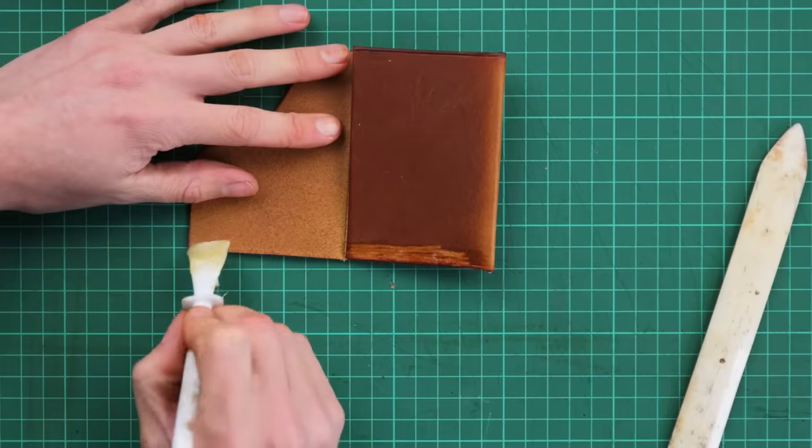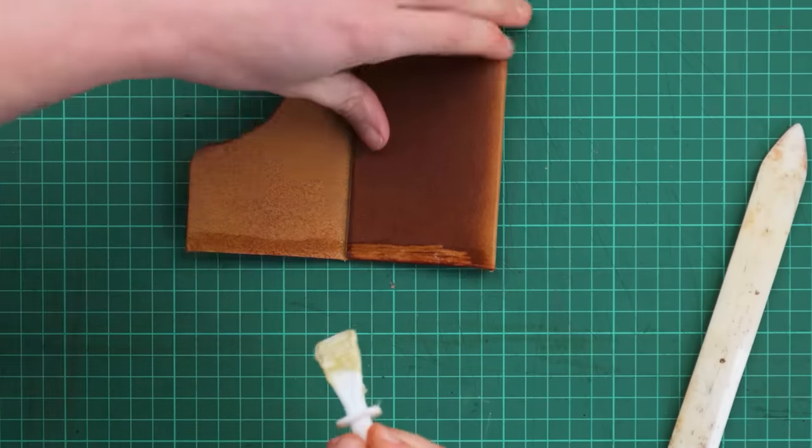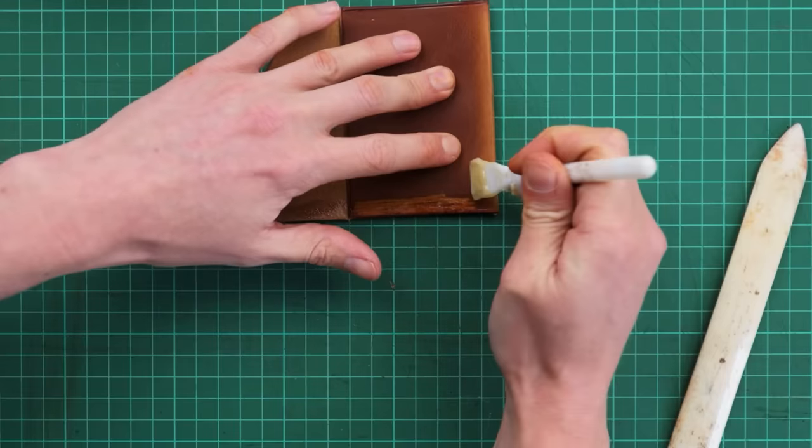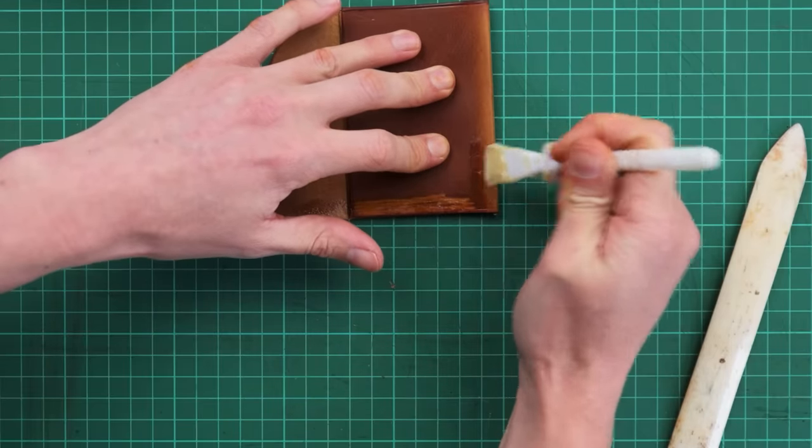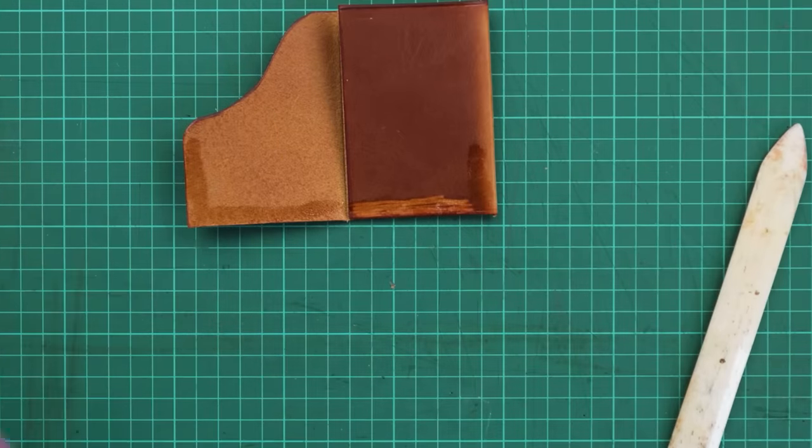And then we can glue along the bottom of both the middle section and our front. We also need to put a little bit of glue up towards that curved corner. And once again we just need to let this go off a bit before sticking down.